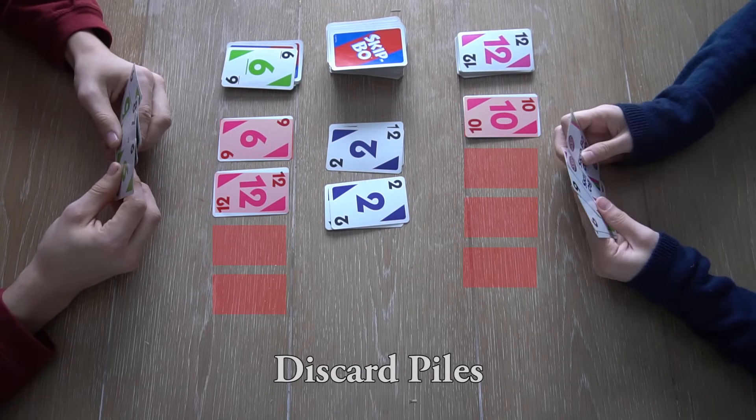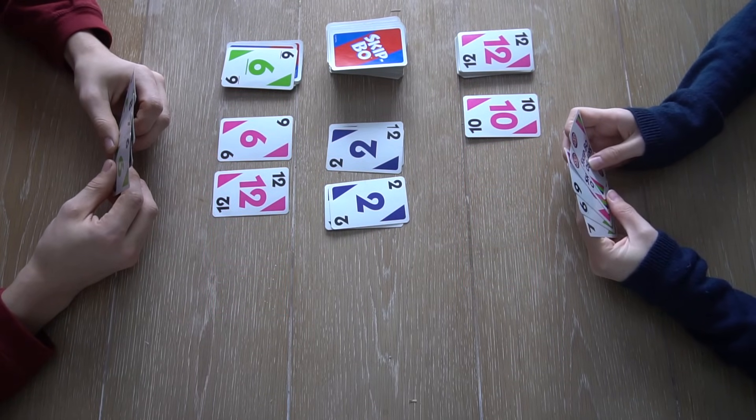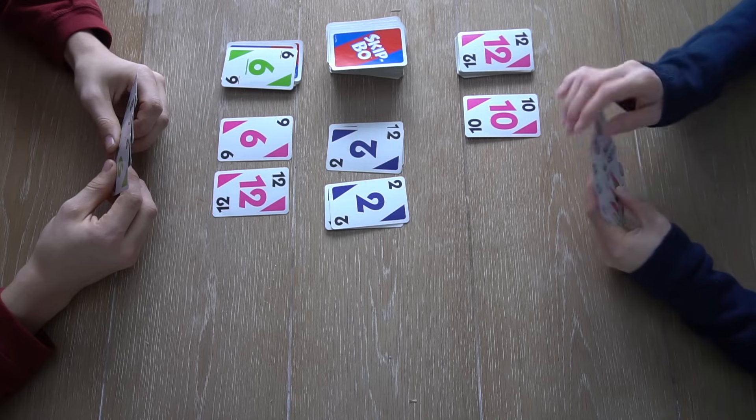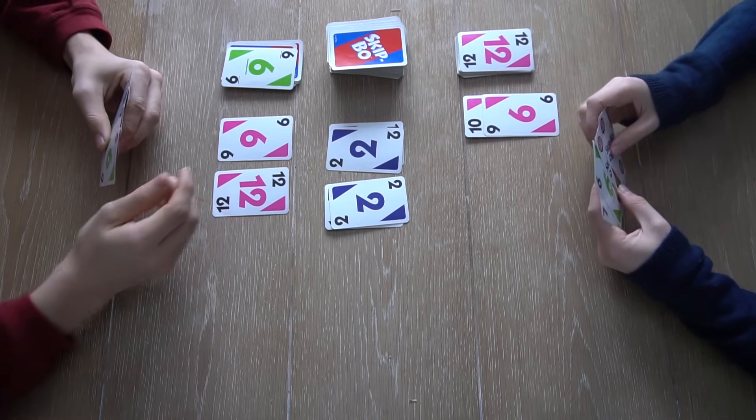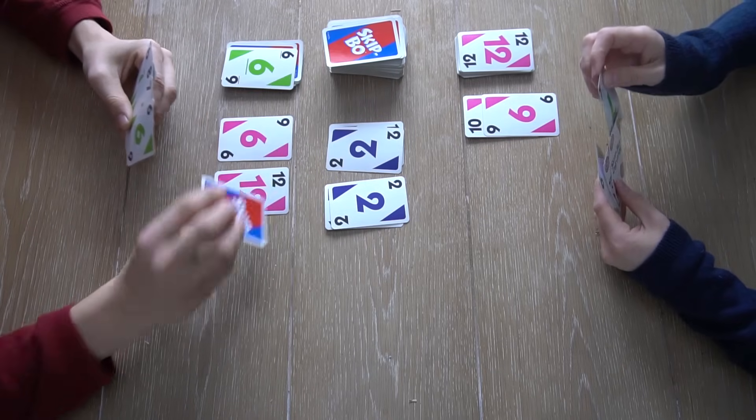A player's turn ends when he can't or refuses to make a play. At the end of a turn, the player must discard one card into one of his discard piles.